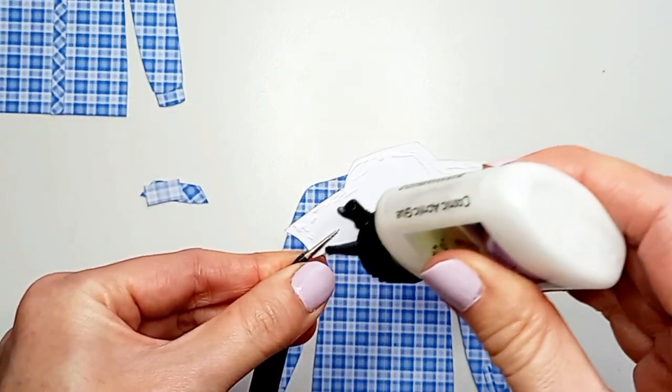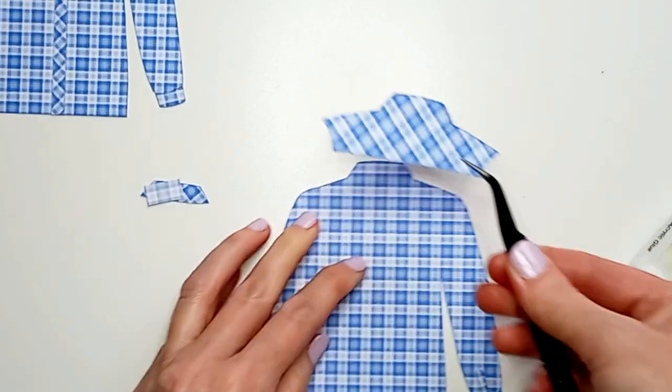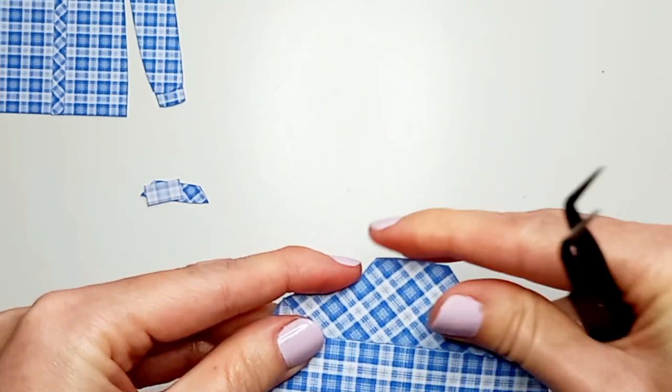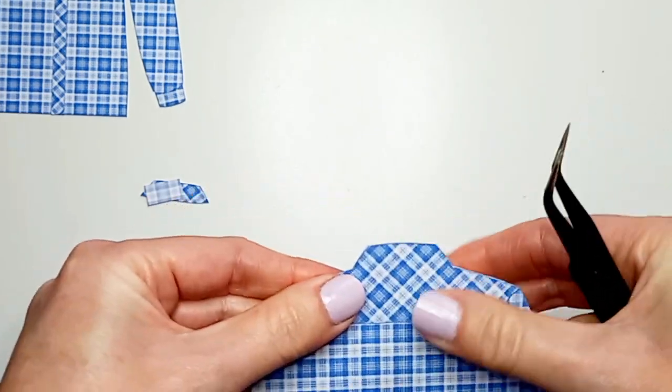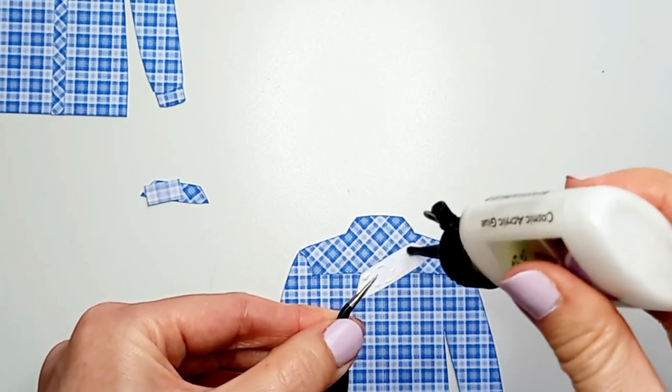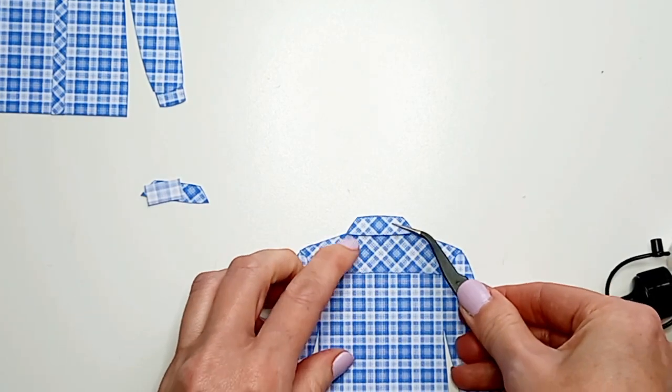Okay, so the next piece is the back yoke. And this is going to be lined up along that top edge. And then one of the back collars is going to go on top of that.